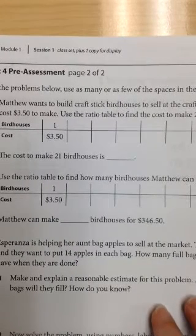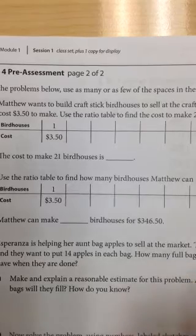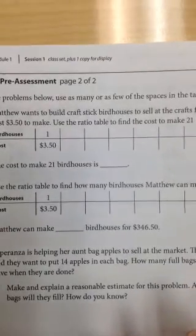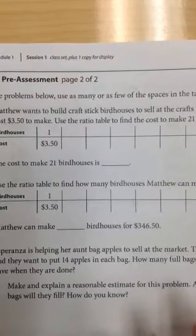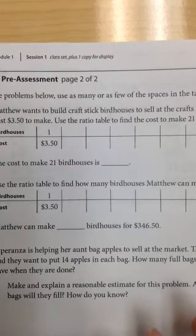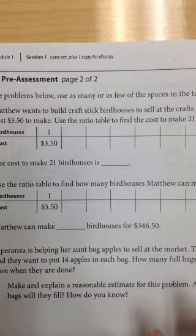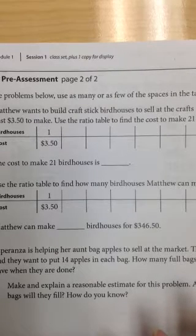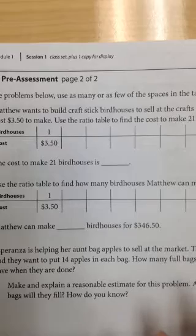So we have problem number 6. Matthew wants to build craft stick birdhouses to sell at the craft fair. Each birdhouse costs $3.50 to make. Use the ratio table to find the cost to make 21 birdhouses.